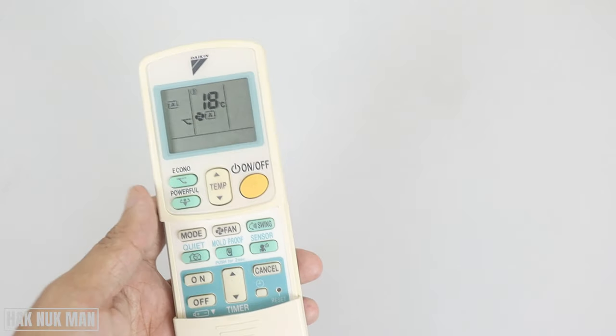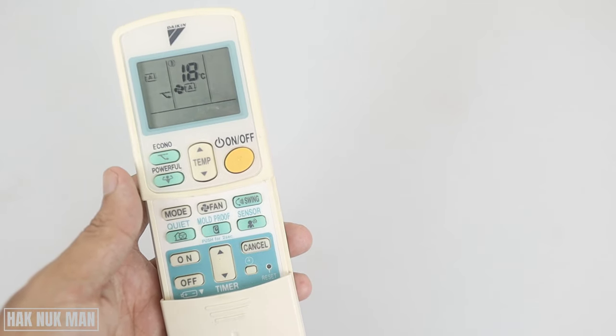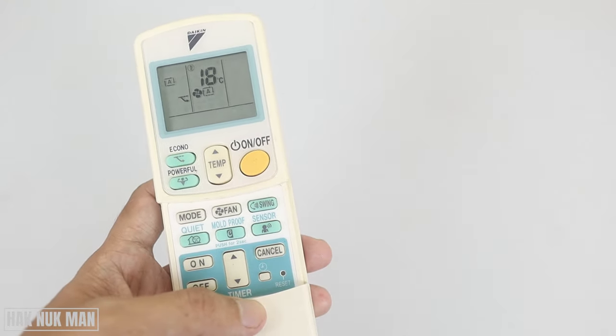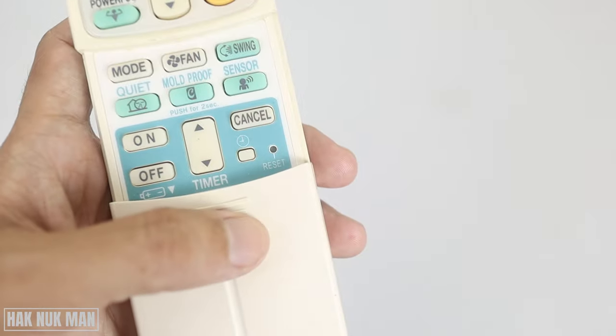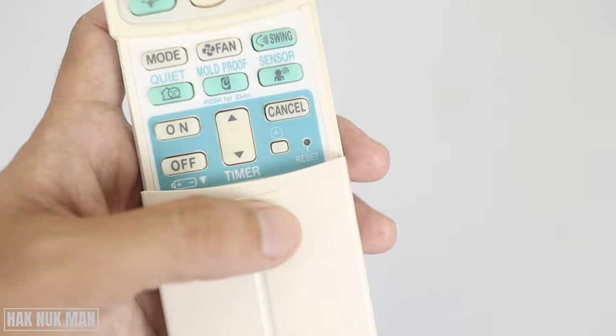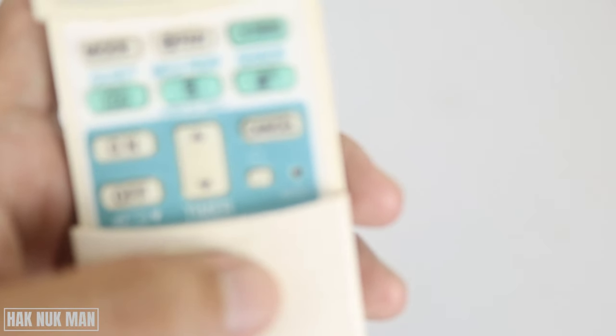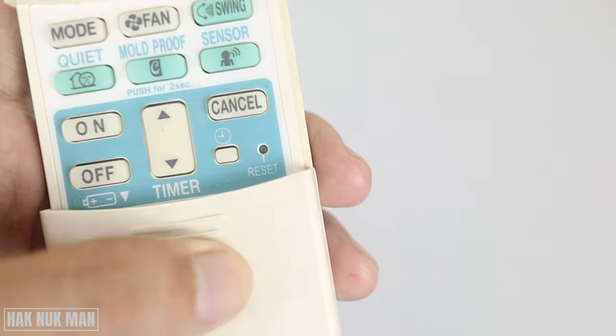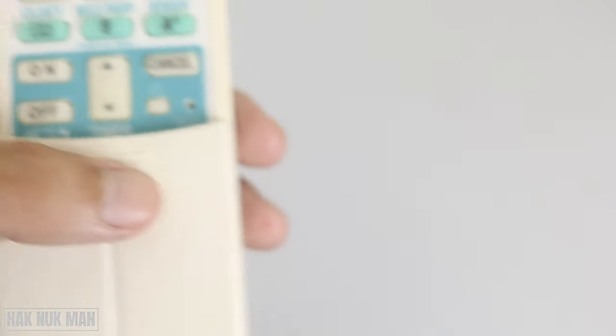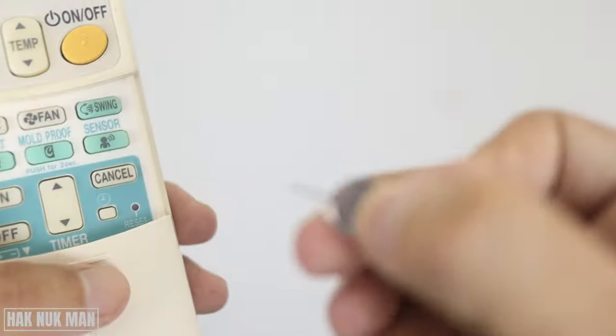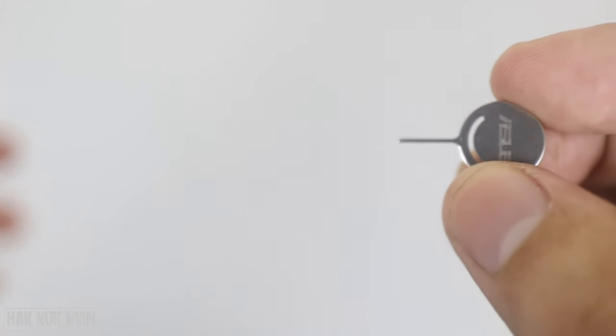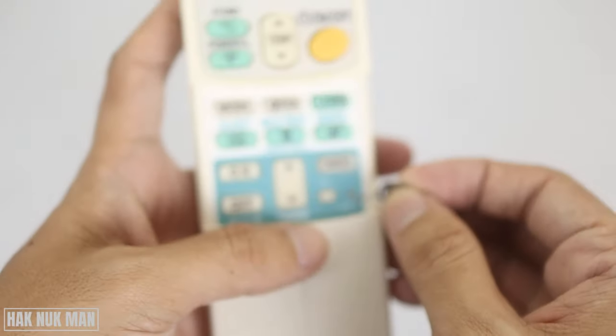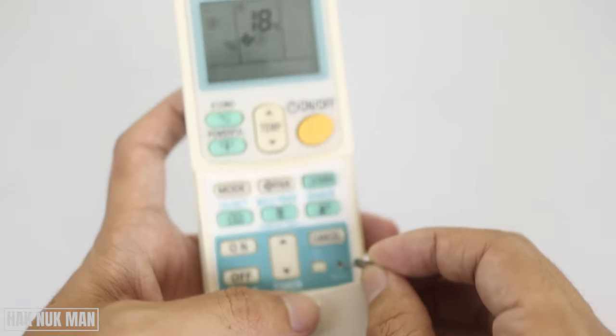If your remote control has the same problem, you just need to reset the remote control. You can see the word reset here, and the button is deep inside the remote control. All you need is this pointer—I don't know what it's called, but it's used to take out a phone SIM card. You just press it into the hole of the remote control.